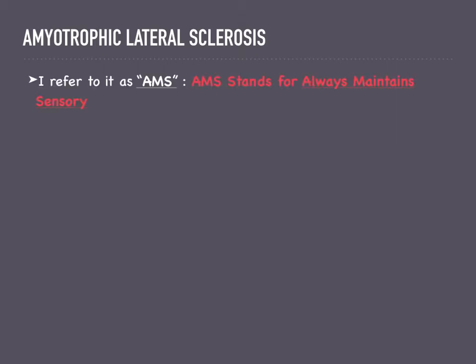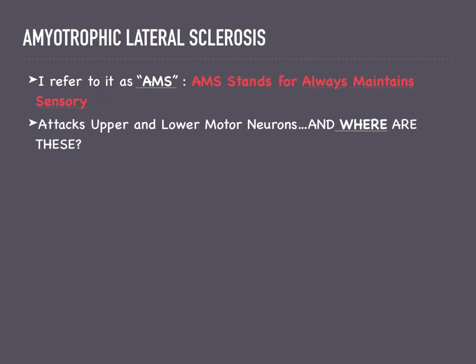I refer to it as ALS, and a key mnemonic is AMS — 'Always Maintain Sensory' — meaning that regardless of the severity of the disease, the sensory tract is always going to be intact. Amyotrophic lateral sclerosis attacks the upper and lower motor neurons.